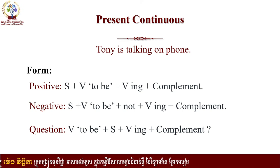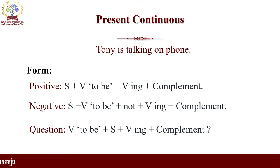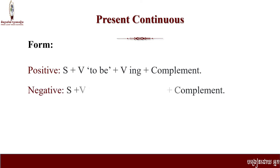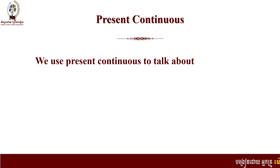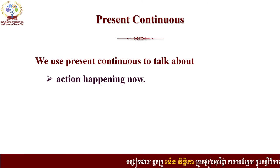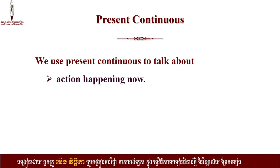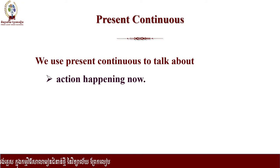Now we know the form of present continuous. Is present continuous used only for the action that is happening right now, or are there more uses? We use present continuous to talk about the action happening now — like the example of Tony talking on the phone. When we see something happening now, we use present continuous.